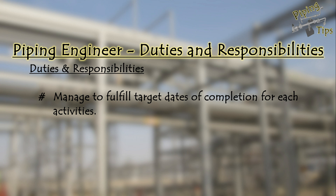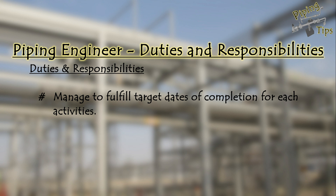It is a common case in construction that we cannot complete our jobs within the target days. Mainly, we fail to plan perfectly or we fail to execute our plans perfectly. So we have to assess our work scope very carefully. In the execution phase, we have to closely monitor our planned progress and make corrective actions to meet it. It is the duty of the piping engineer to manage and fulfill the target dates of completion for each and every activity — whether it is a tie-in job or a production date. If we correct our progress as per our planned progress, we can achieve our completion dates and deliver our products on time.